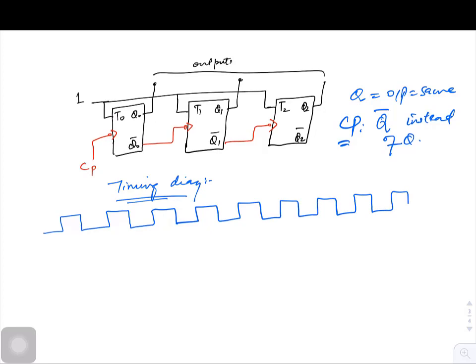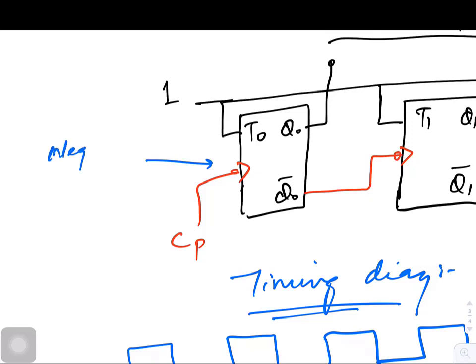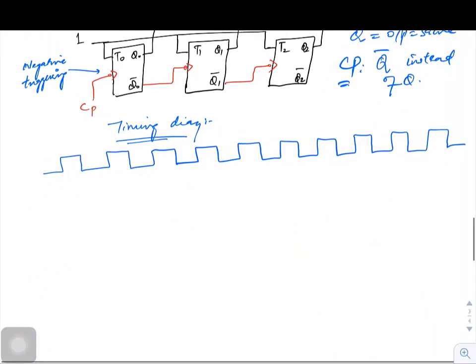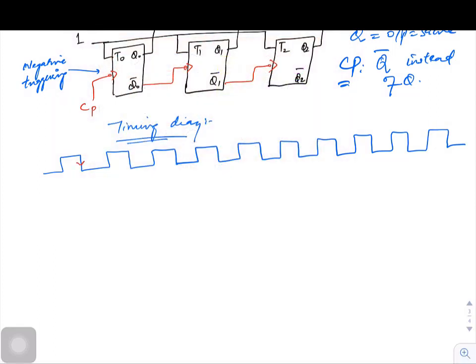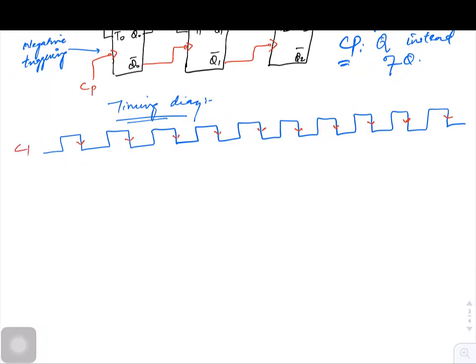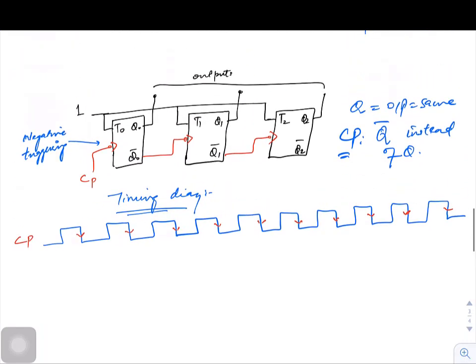which are changing from one to zero. Because again, as you can see in the circuit, there's a bubble, so it is a negative triggered circuit. I have to note down one to zero transitions: one, two, three, four, five, six, seven, eight are compulsory and two are extra to check that the sequence is getting repeated. This is your clock pulse.